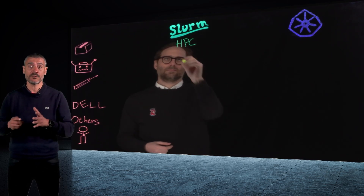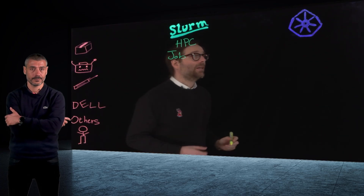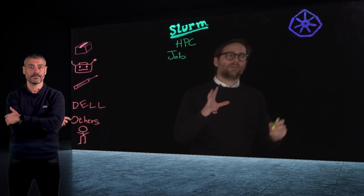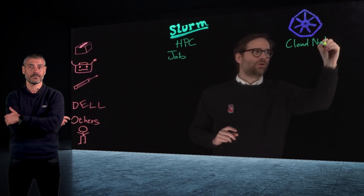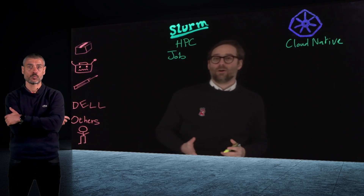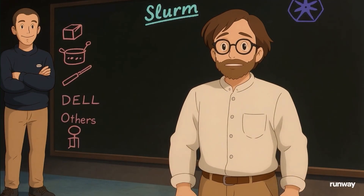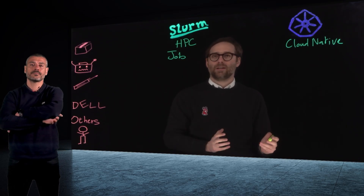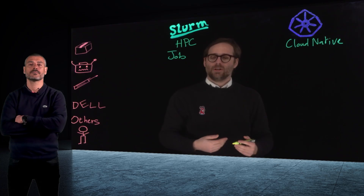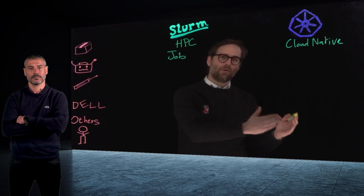SLURM is a job scheduler made for scientific computing. In the cloud-native world of Kubernetes, there is also a huge trend on AI. OpenAI, for example, since its incubation through the Ghibli viral moment, they are using Kubernetes to schedule and manage their workloads. So is Kubernetes the tool for the future, or is SLURM from the past?